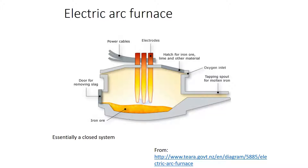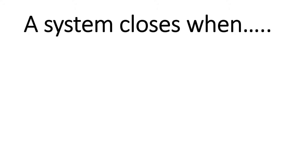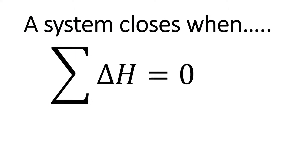In reality systems are much more complex. You can have chemical reactions — for example, combusting methane produces combustion products, so there's a heat of reaction associated with it. Sometimes we have excess air. We say a system closes when the sum of delta H equals zero. To illustrate this, let's go through a problem.